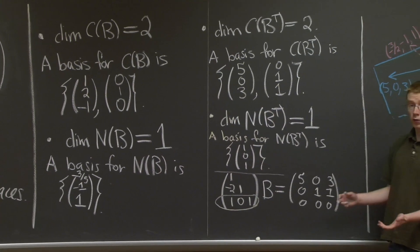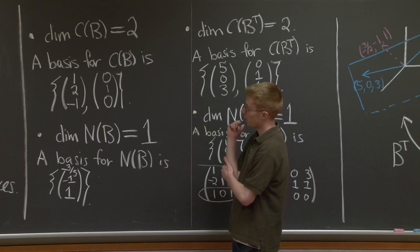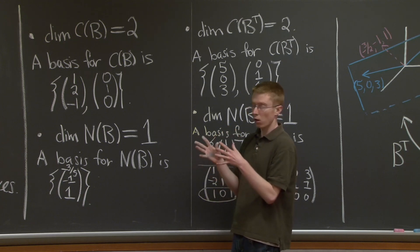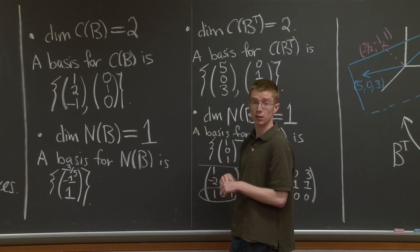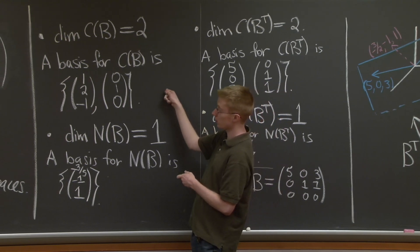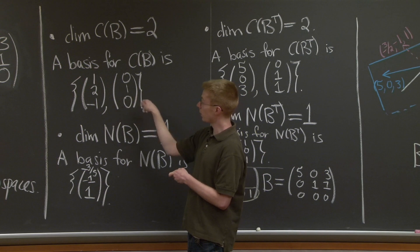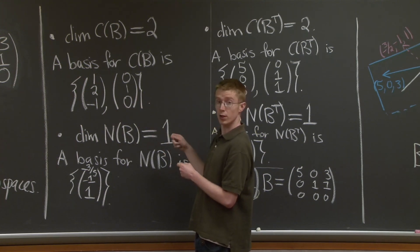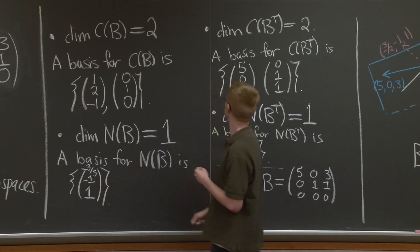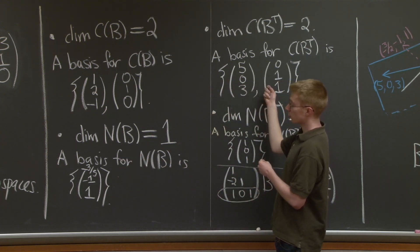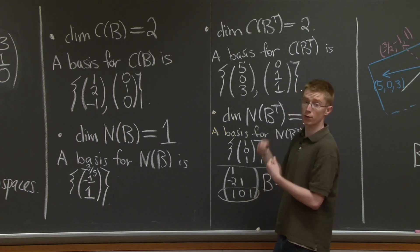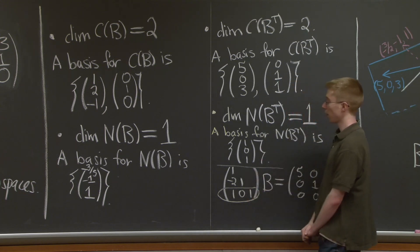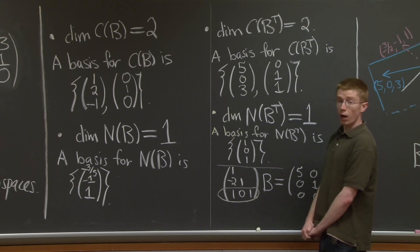So we've found the dimension and basis for all of the four fundamental subspaces. Before I move on, I just want to recall which of the L matrix or the U matrix we used for each of these subspaces. For the column space, we used the pivot columns of the L matrix. For the null space, we looked at the U matrix. For the row space, we also looked at the U matrix. And for the left null space, we needed to invert the L matrix and look at the free row.